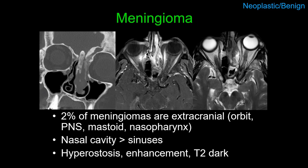Meningiomas occur intracranially but 2% are extracranial, seen in the orbit, sinuses, mastoids, and nasopharynx. When occurring in the sinonasal cavity, they tend to be near the skull base in the nasoethmoidal region. They image like meningiomas elsewhere, with enhancement and moderate T2 hyperintensity. Most characteristic is hyperostosis — these may incite sclerosis and overgrowth of adjacent bone. On the coronal CT image, the ethmoid roof, crista galli, and nasal septum are all markedly hyperostotic, a really good clue for a sinonasal meningioma.